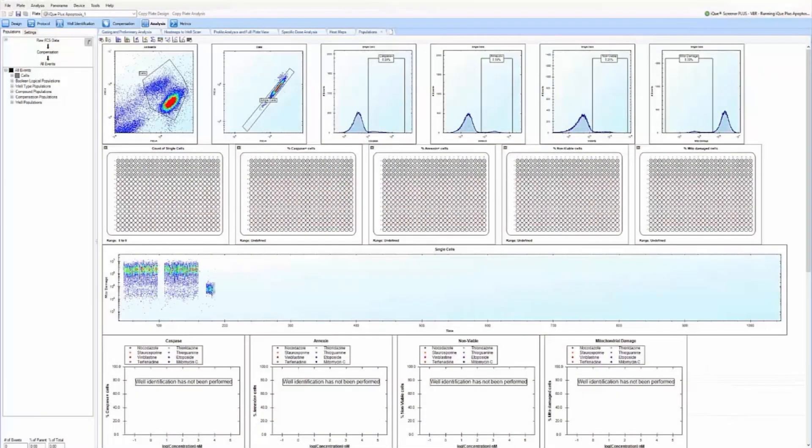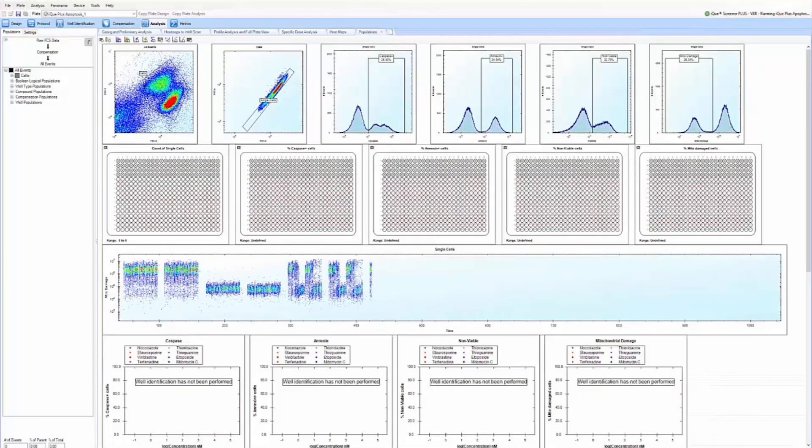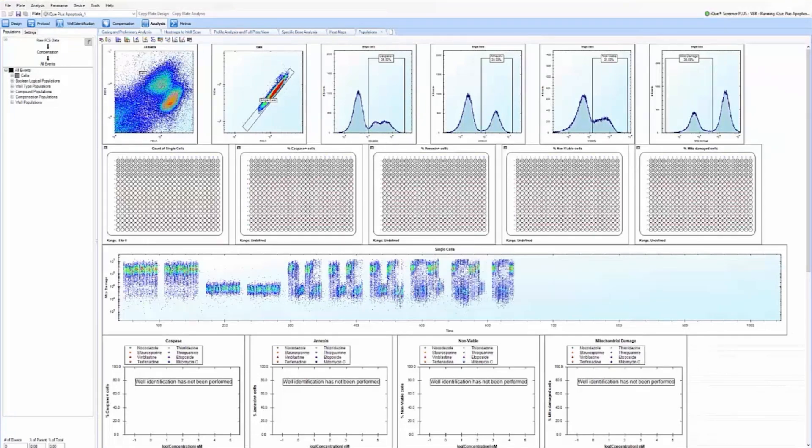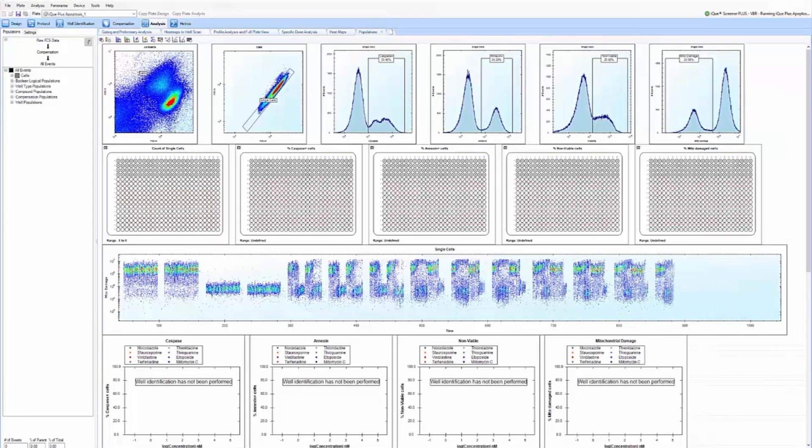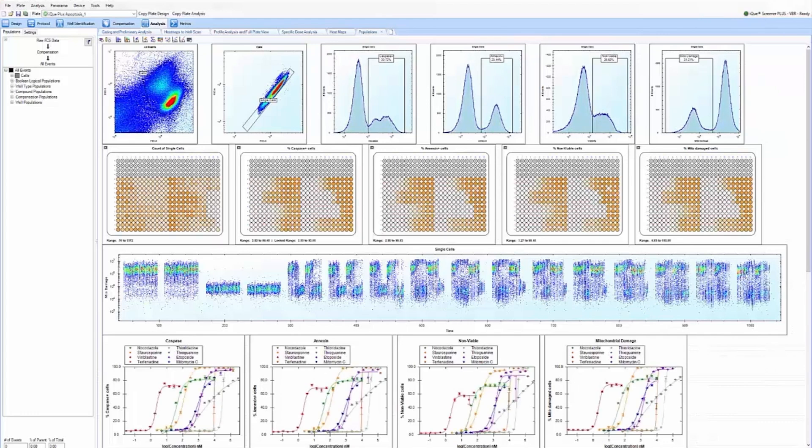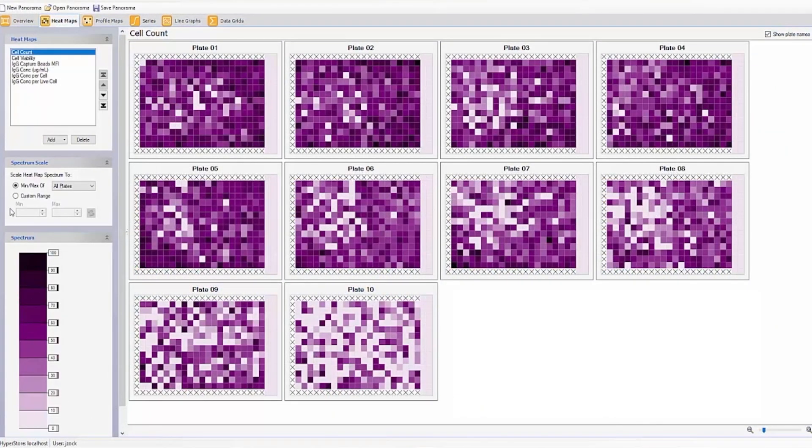This allows you to quickly and easily perform multi-parametric analyses, categorizing sample subsets and visually identifying trends to help guide the next steps of your research. Take your analysis to a whole new level by using the Panorama feature to visualize data across multiple plates simultaneously, even if acquired on separate days.